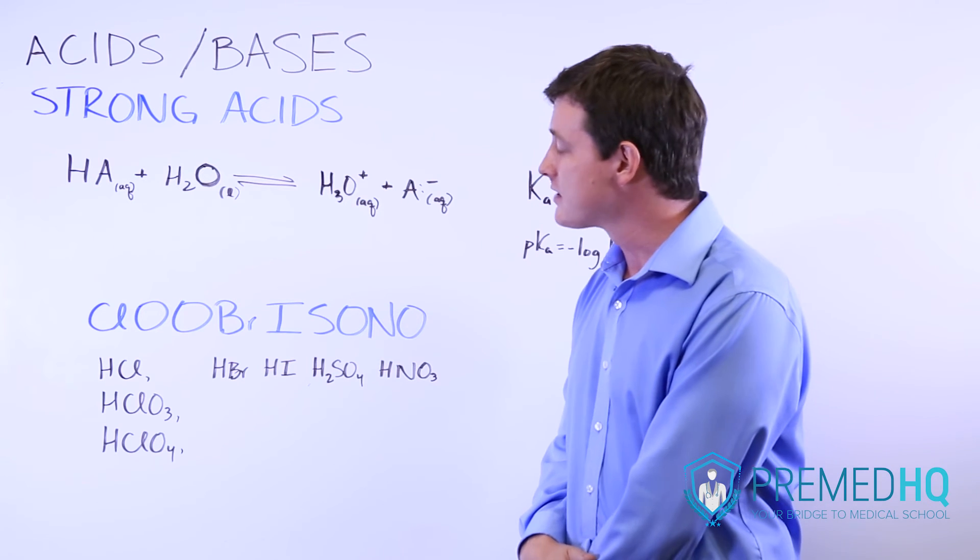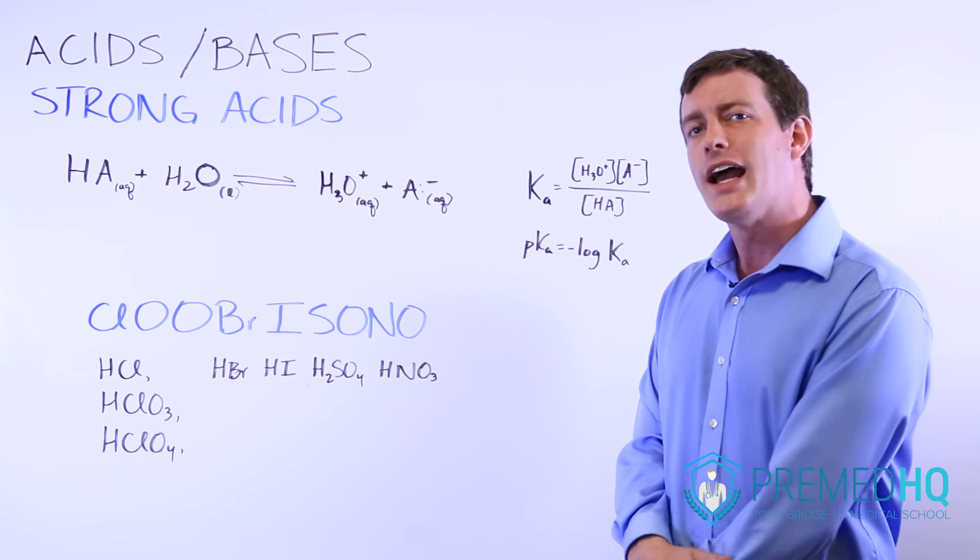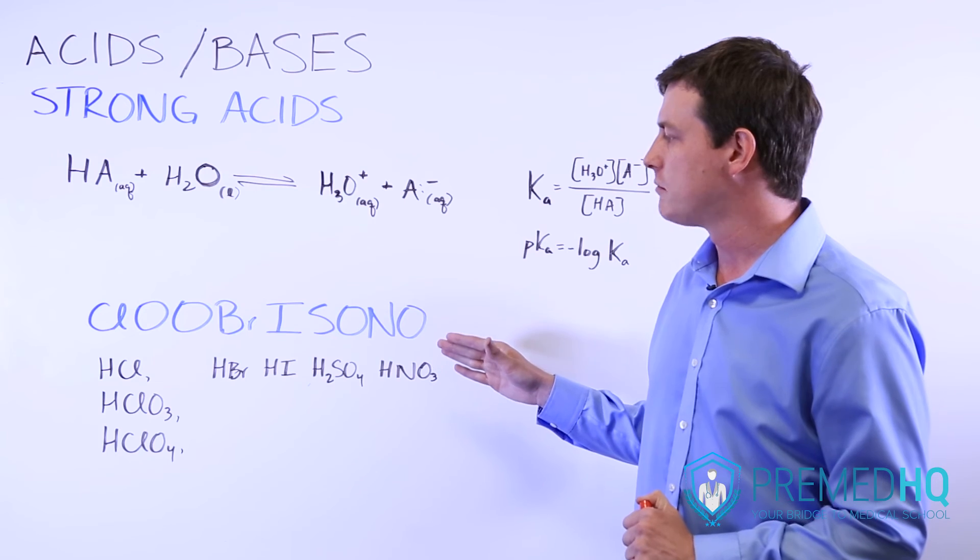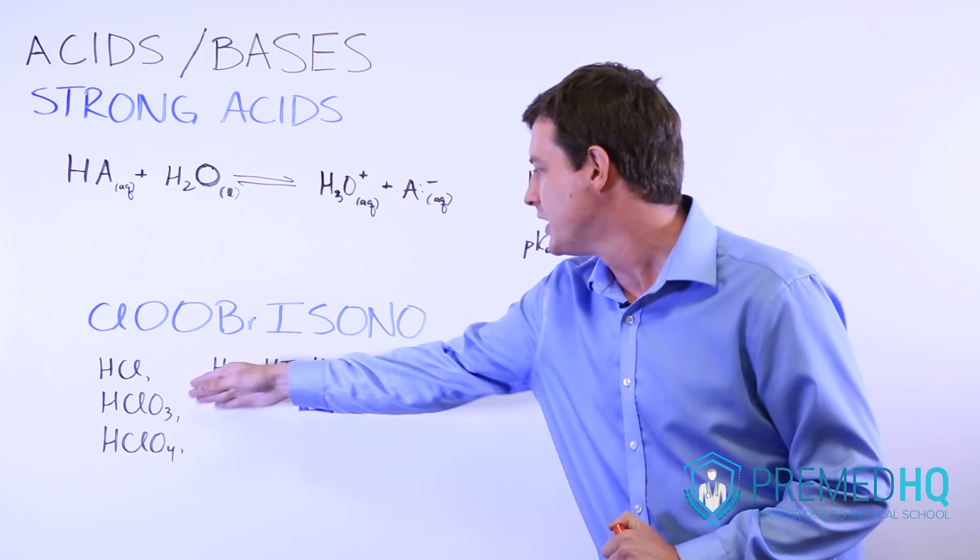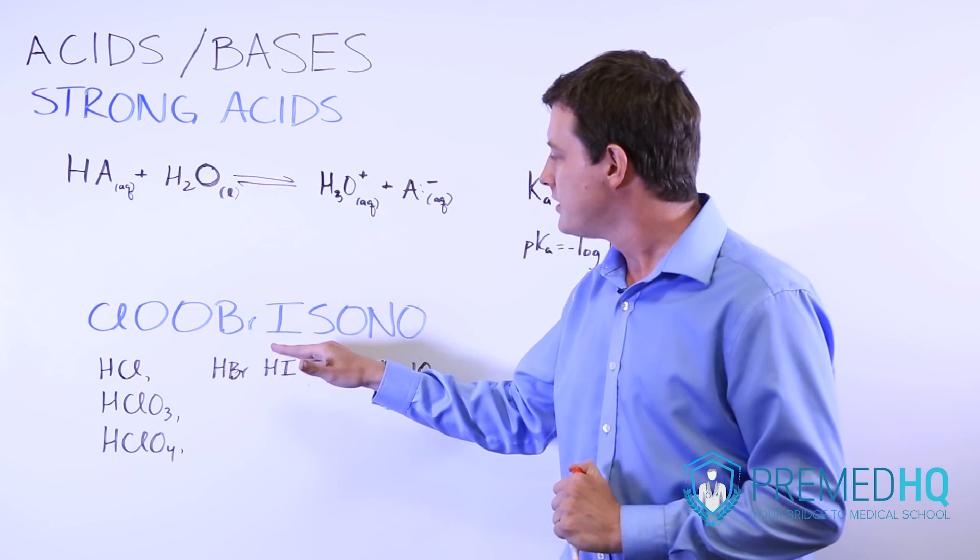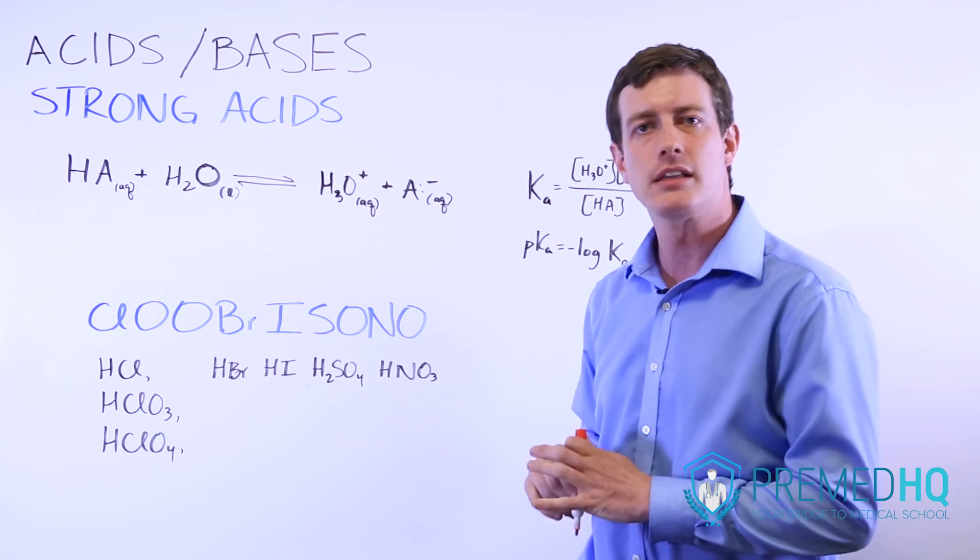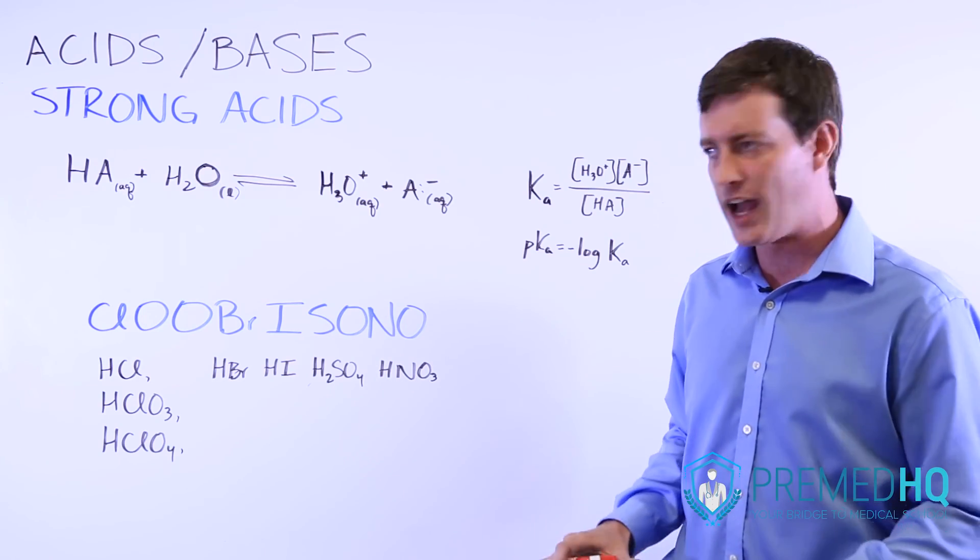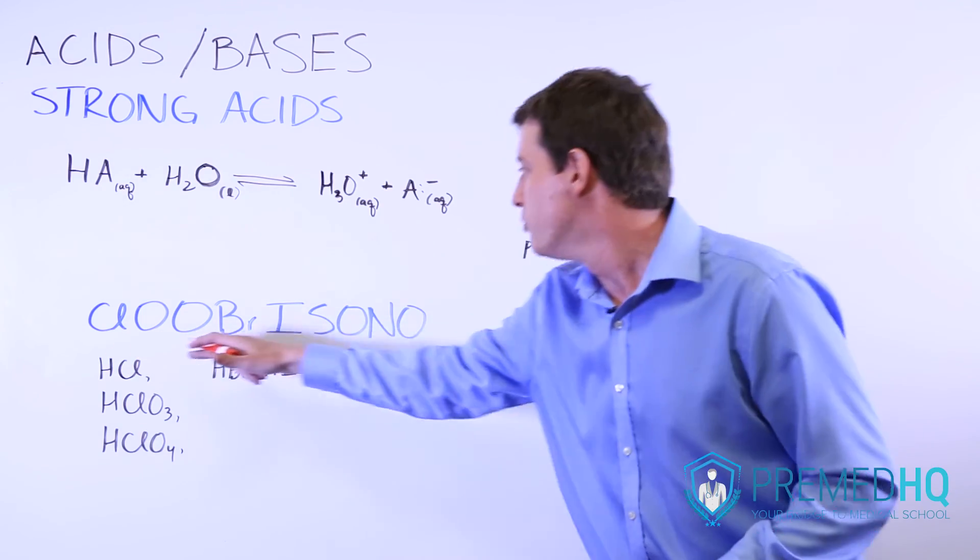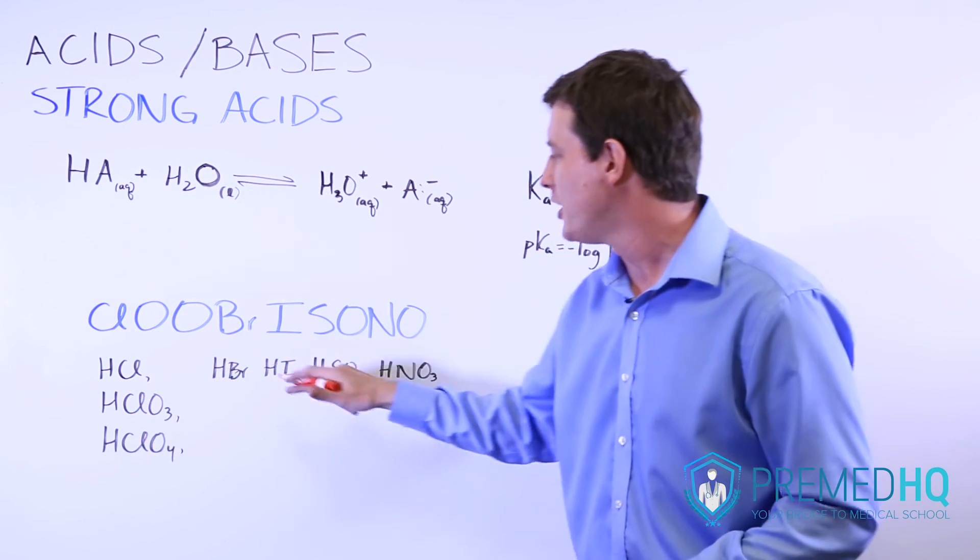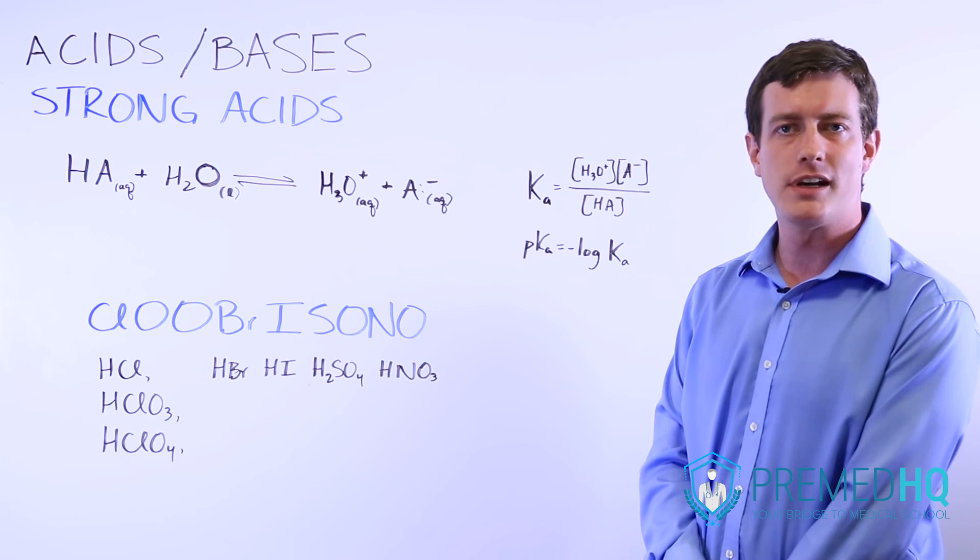So this is your list of strong acids to know for general chemistry, and this is one that if you're taking the MCAT, for example, and they mention something like chloric acid or hydrobromic acid, you will be expected to recognize that this is something that will dissociate completely because it is a very, very strong acid. So that's your list. Clubrisono, and all of these letters represent things that are paired with hydrogen in order to produce that.